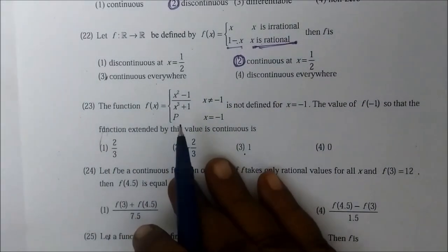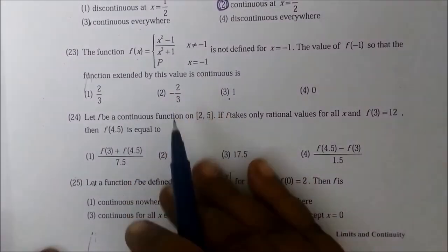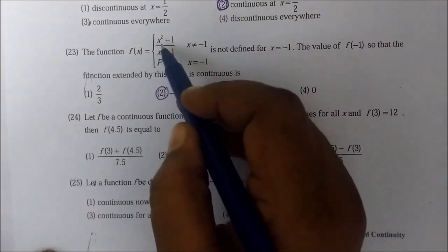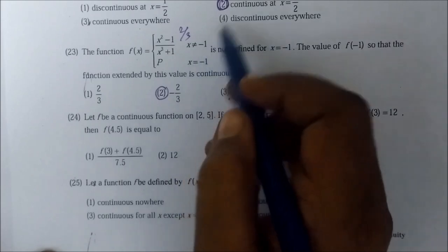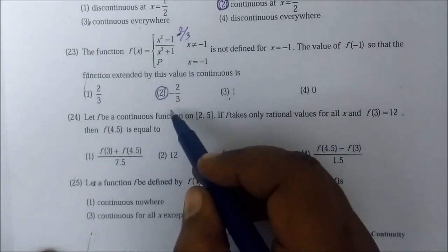Then the answer is right. Question number 23. This is quite easy. The answer is right. Minus 2 by 3. 2 by 3 is the minus sign. X not equal to minus 1. X equal to minus 1. So this is the minus sign.